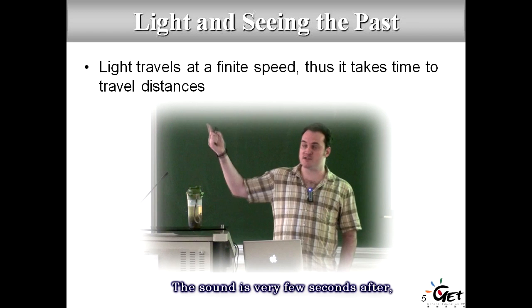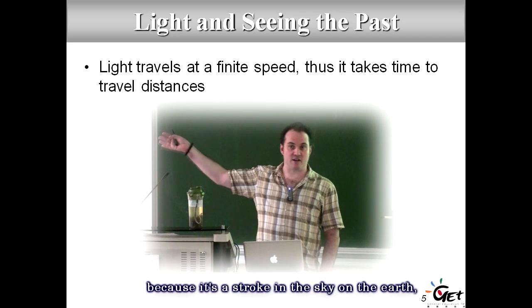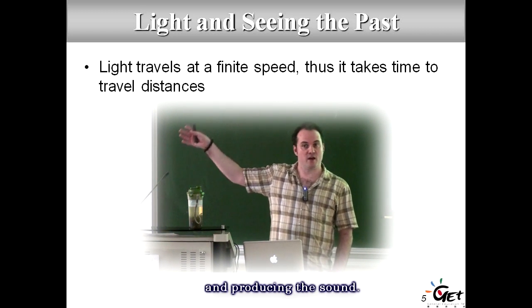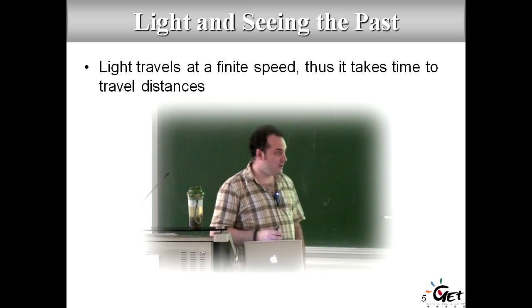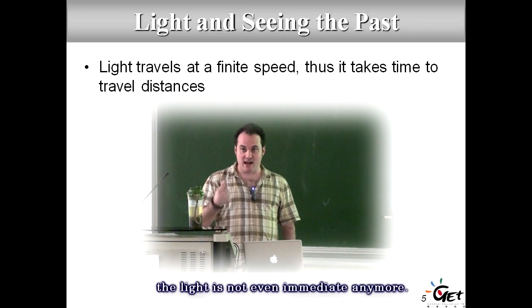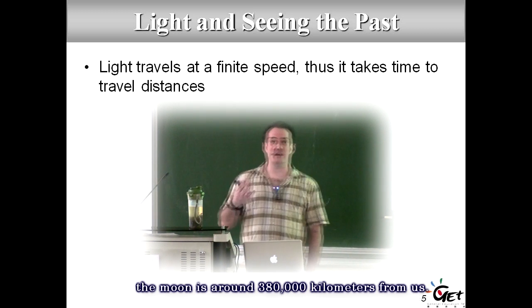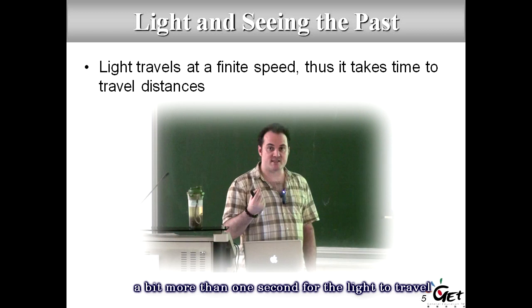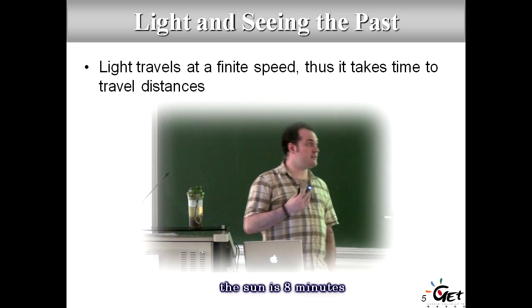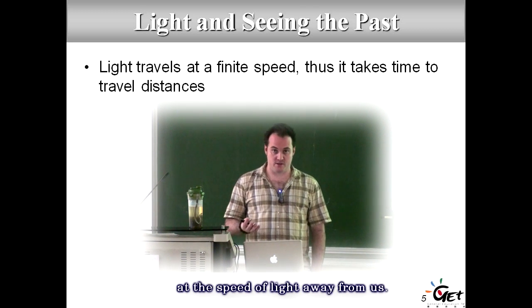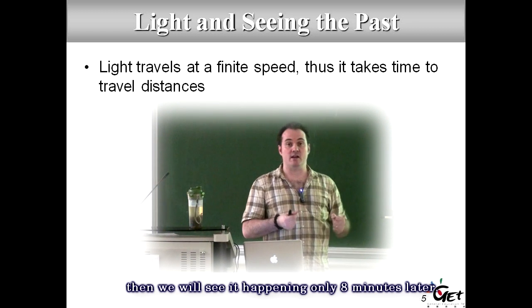Here we see lightning — the sound comes a few seconds after. That's a good example. The lightning appears almost immediate because it's close, but sound is slower. For very distant objects, even light is not immediate. The Moon is around 380,000 km away, so it takes just over one second for light to travel from the Moon to us. The Sun is eight light-minutes away — if we could switch off the Sun instantly, we would only see it happen eight minutes later.